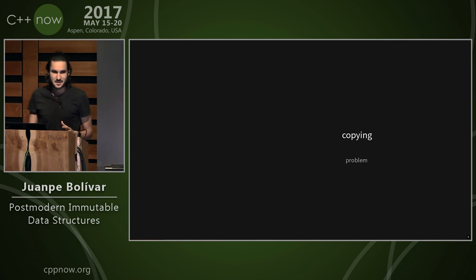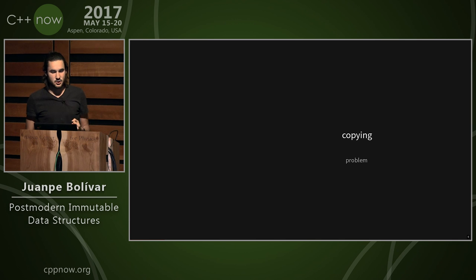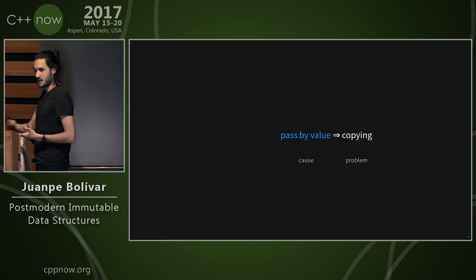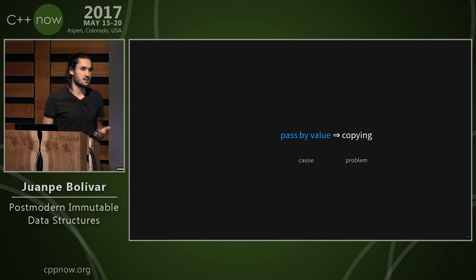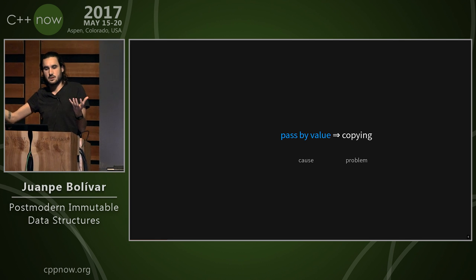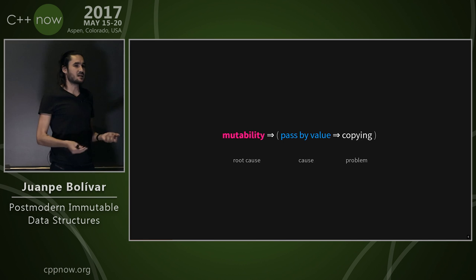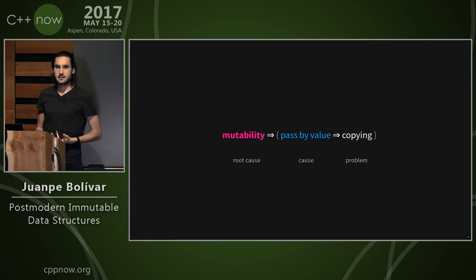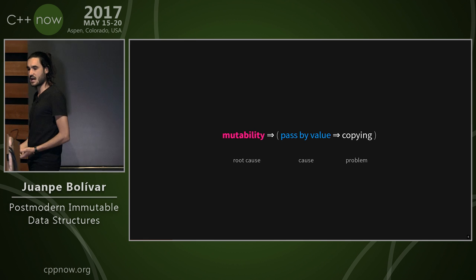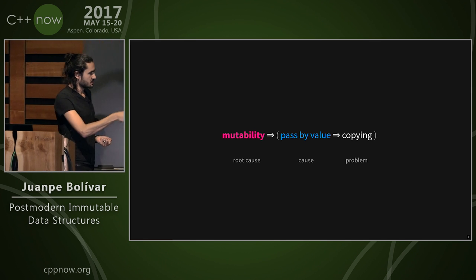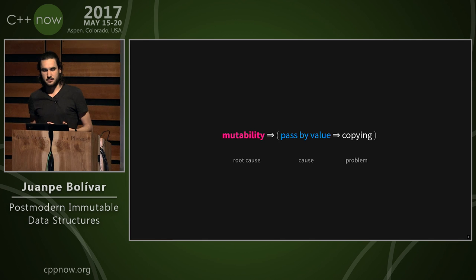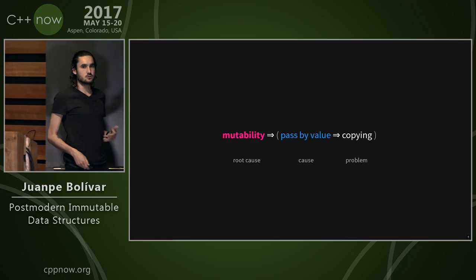Let's think about the problem more carefully. We dropped our ideal value-based architecture because of copying. As C++ developers, we're hardwired to think that passing by value involves copying the data. But does this really need to be the case? We could store the value on the heap and pass a pointer around. The reason we can't do this is mutability — in C++, all types are updated only via a mutable interface. But if we remove mutability from the equation, we can achieve passing by value without copying, as soon as we have an immutable interface.